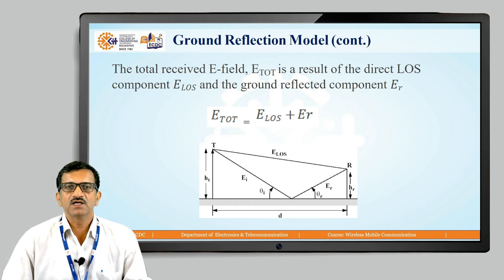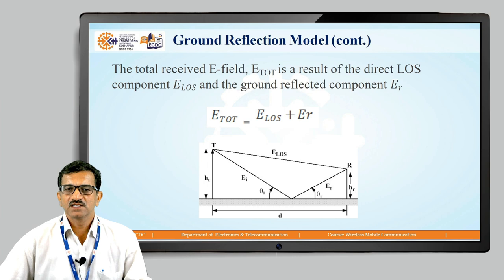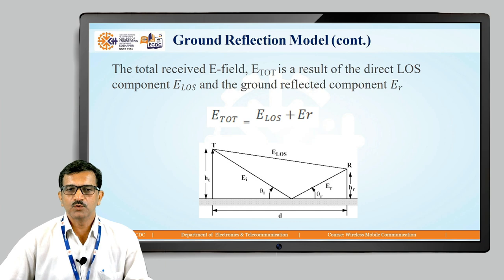E_total can be calculated as E_LOS (the line-of-sight component of the electric field) plus E_R (the reflected component of the electric field). As shown in the diagram, the transmitting antenna communicates directly with the receiving antenna via the line-of-sight wave, while the ground-reflected wave reflects from the ground and also reaches the receiving antenna. So the total electric field at the receiving antenna is E_LOS plus E_R.